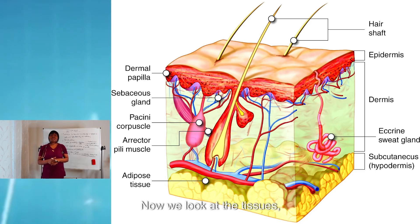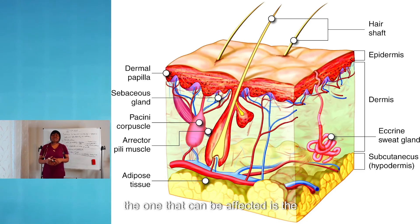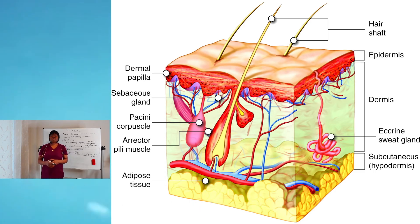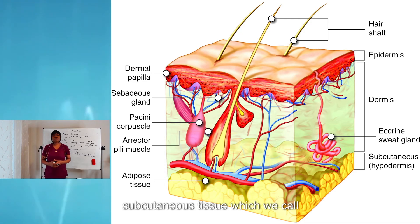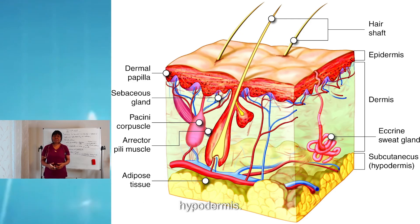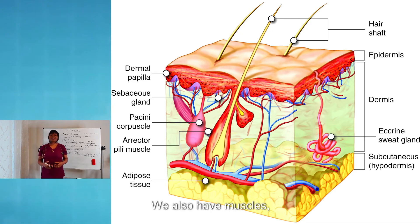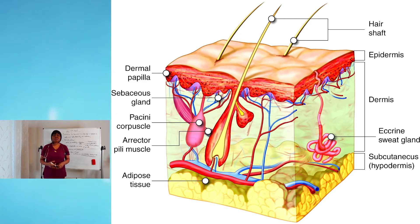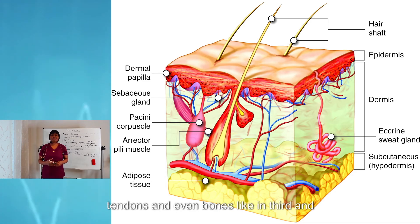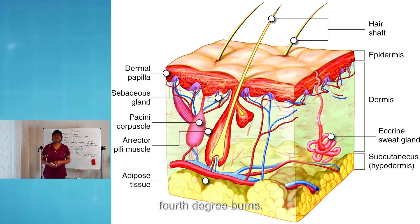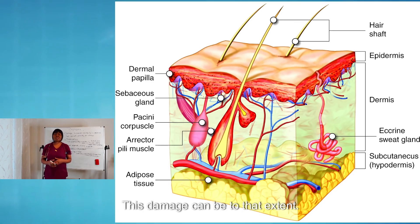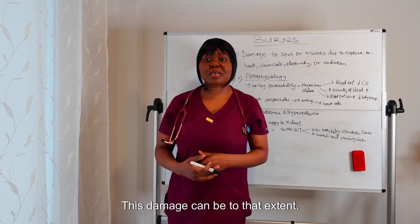Now we look at the tissues. The tissue that can be affected is the subcutaneous tissue, which we call the hypodermis. We also have muscles, tendons, and even bones — as in third and fourth degree burns, the damage can be to that extent.